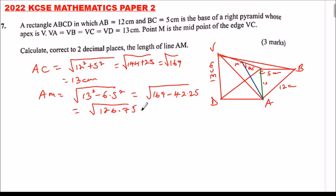Use your calculator to get the square root and you find it is 11.25833... Since we are told two decimal places, and the next number after 5 is 8, we round up. AM equals 11.26 cm. That's how you work out that question—you'll be able to get 3 marks.